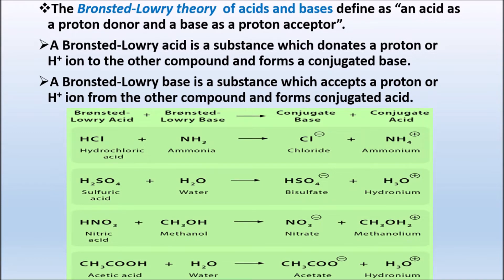Second theory: Bronsted-Lowry Theory of Acid and Base. According to Bronsted-Lowry, acid is a substance that donates a proton, and base is that which accepts a proton. So the Bronsted-Lowry acid is the substance that donates a proton (H+ ion) to another compound and forms a conjugated base. Bronsted-Lowry base is the substance that accepts a proton and forms a conjugated acid.